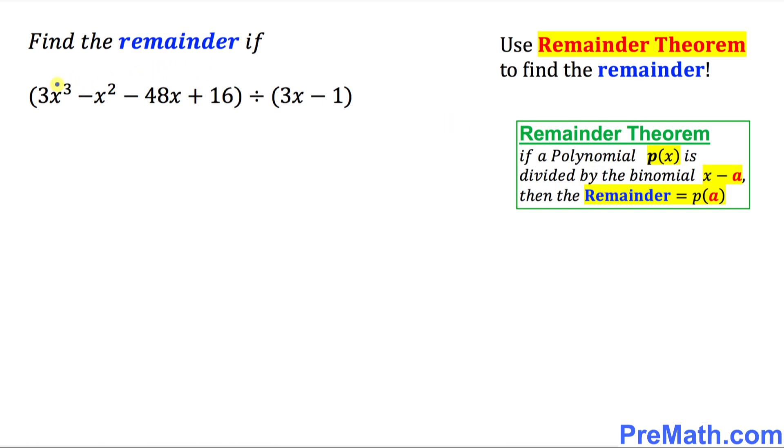Let's focus on our dividend part, this part. The very first thing, we want to call this one P of x. P stands for polynomial. So let's write down P of x equal to 3x power 3 minus x square minus 48x plus 16. That is the very first step.